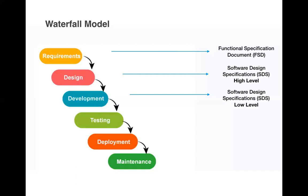The client tests how the code behaves in different scenarios, and based on this provides sign-off. The test case specification documents prepared during this phase are: unit test specification (UTS), system integration testing document, and user acceptance testing document. Once testing is complete and sign-off is obtained, the deployment phase begins — where the actual code is deployed into production.